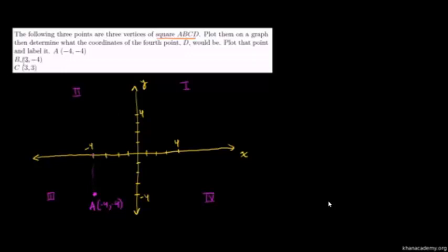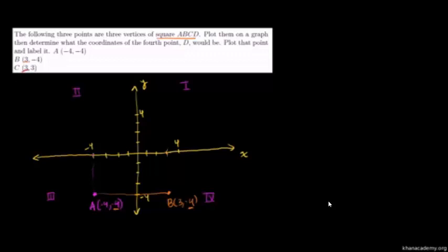Point B: x is positive 3, y is negative 4 — so we drop down into the fourth quadrant. That is point B at (3, negative 4). We can already see the bottom of our rectangle right there — both A and B have the exact same y-value, both at the same level below the x-axis. Then point C is at (3, 3) — it's in the first quadrant, both coordinates are positive. Notice it's on the same vertical as B; they both have an x-value of 3, so C is right above B.